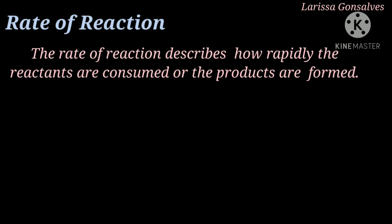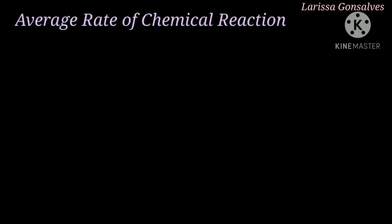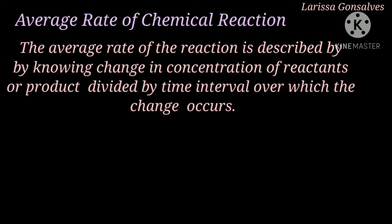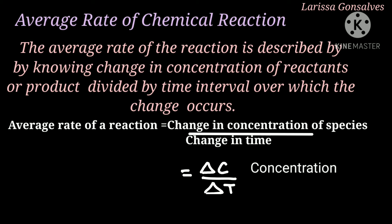So what is rate of reaction? The rate of reaction describes how rapidly the reactants are consumed or the products are formed. The average rate of a chemical reaction is defined as change in concentration of reactants or products divided by the time interval over which the change occurs. The formula is: average rate = ΔC / ΔT, where delta stands for the difference or change, C is the concentration, and T is the time.